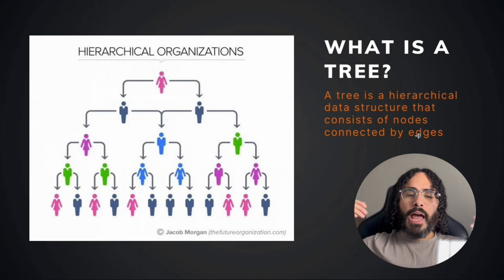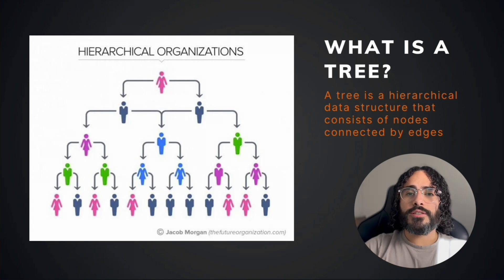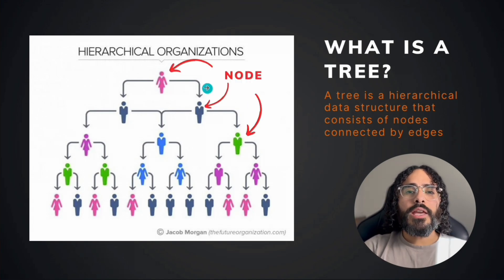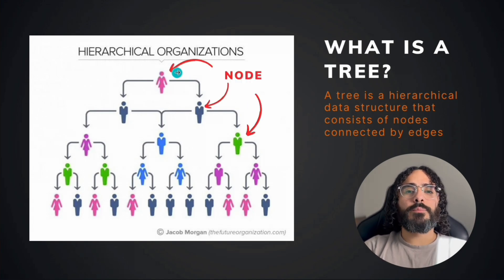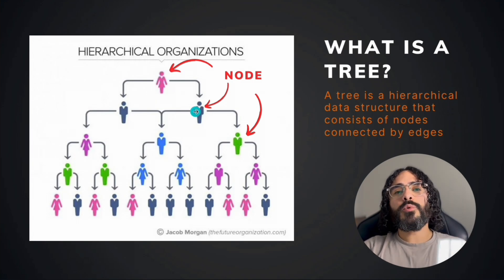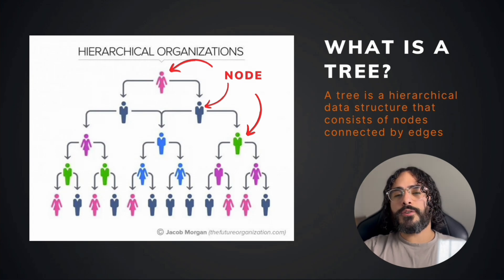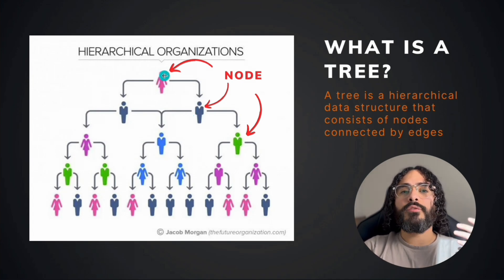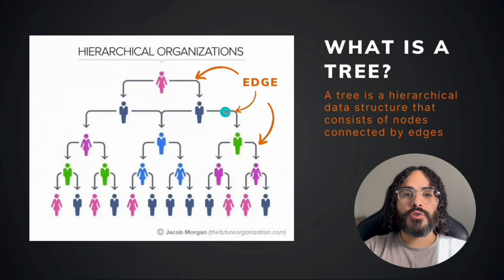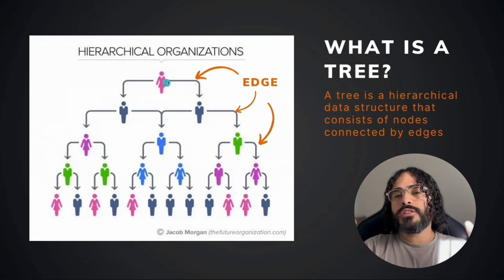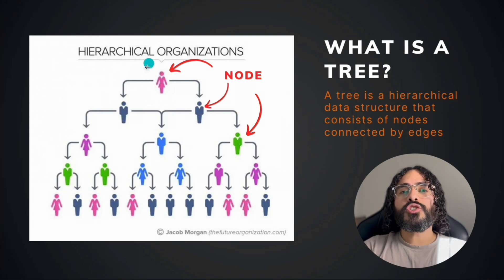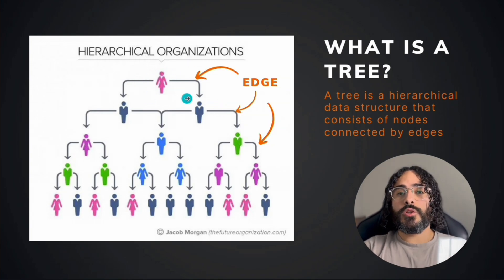As mentioned, a tree is a hierarchical data structure consisting of nodes connected by edges. In this example the people are the nodes — but nodes don't have to be people; they can be values, numbers, letters, anything. Edges are the connections between different nodes, representing the relationship between them. So nodes are the actual values, and edges are the connections between those values.